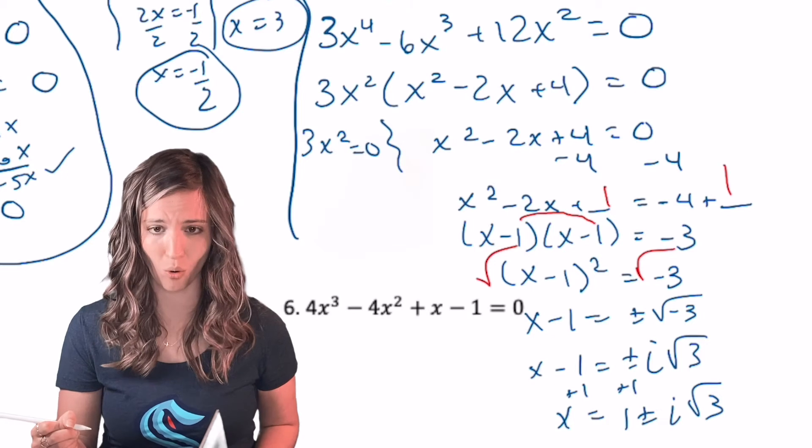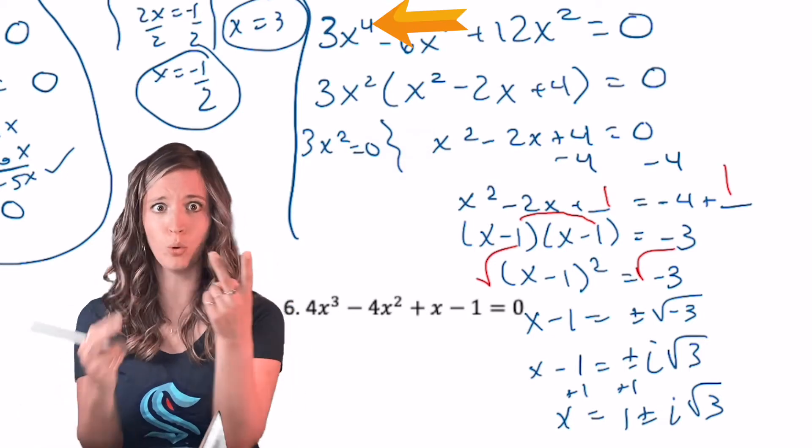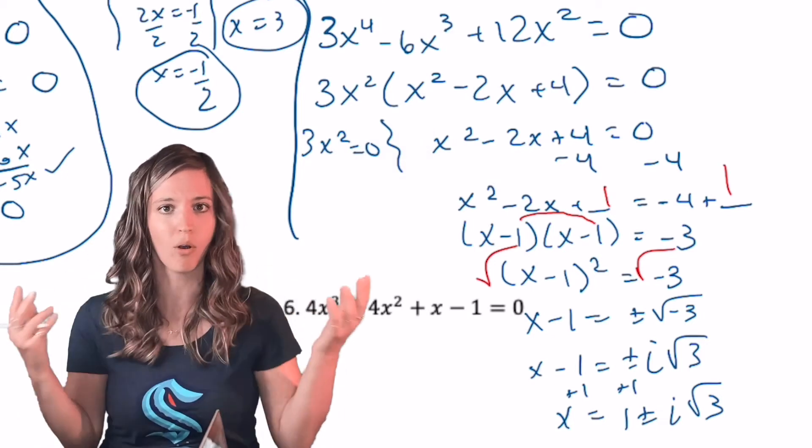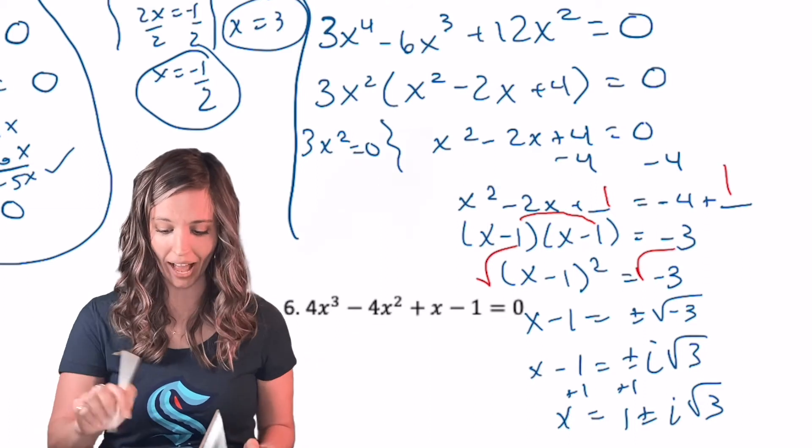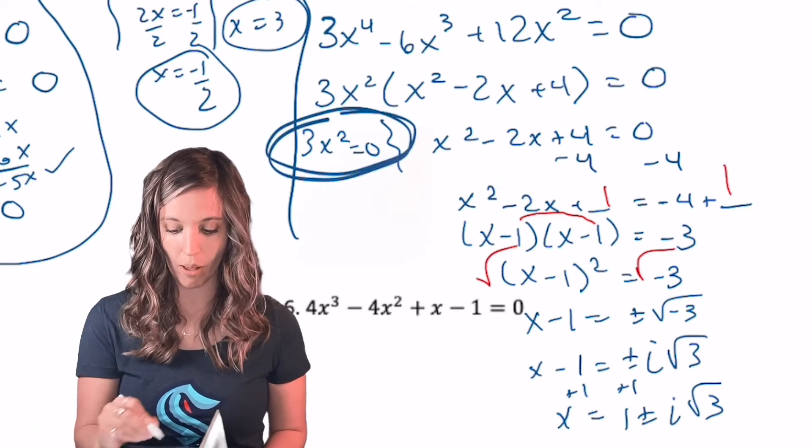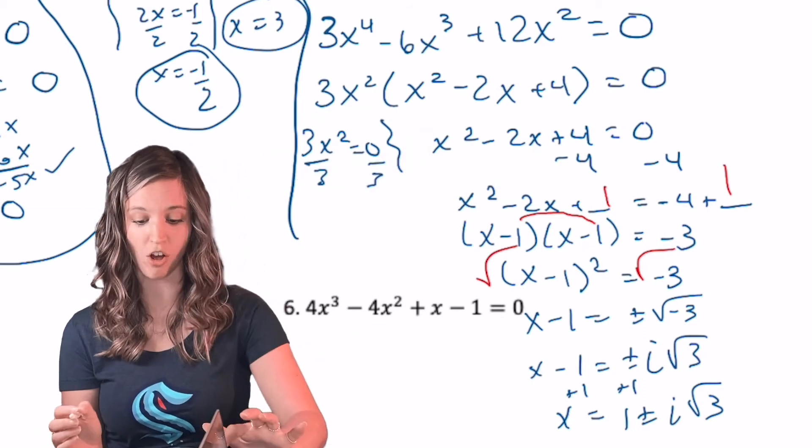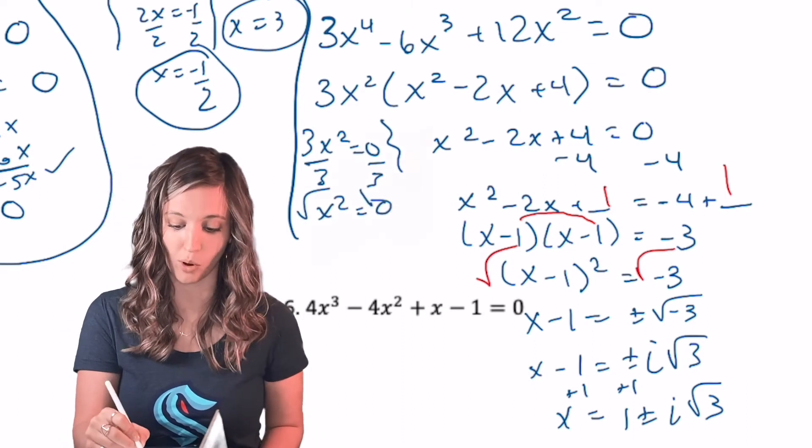Wait a minute. This was a quartic. I'm supposed to have two other solutions. I need to have four altogether. Where are my other two? Oh yeah, this three X squared equals zero. I can go ahead and solve by square roots, divide by three, square root both sides.